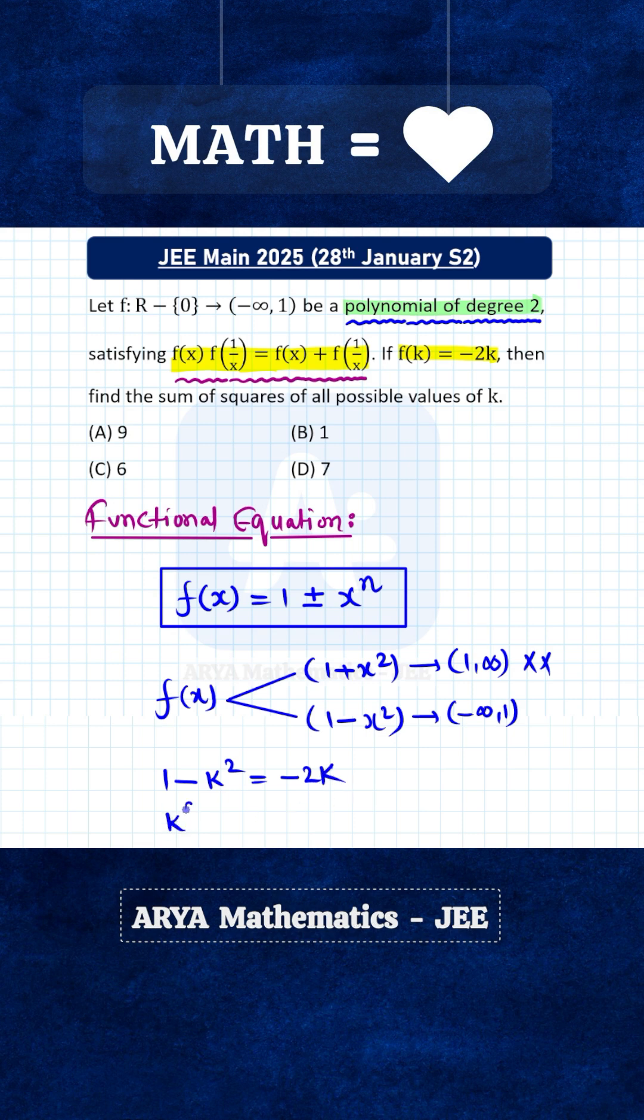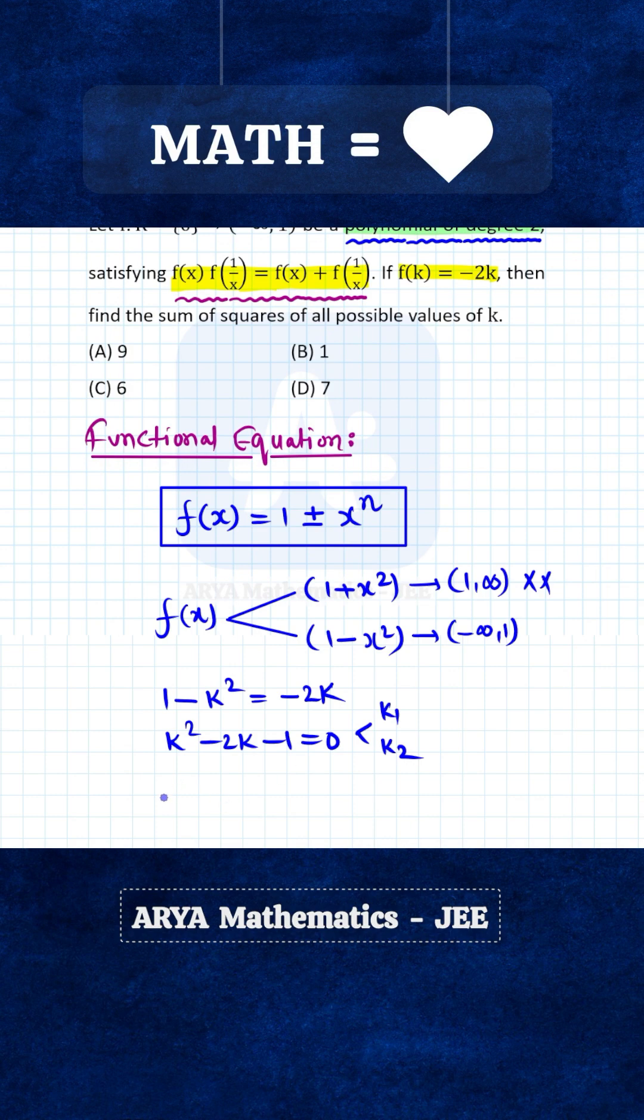From here we will get k² - 2k - 1 = 0, and this is a quadratic equation in k. Let us say that k₁ and k₂ are the roots of this quadratic equation. So we need the value of k₁² + k₂².